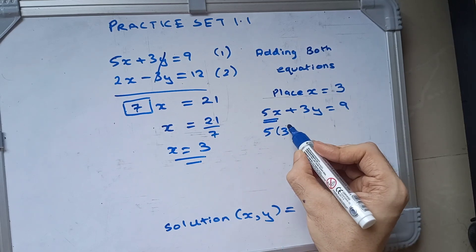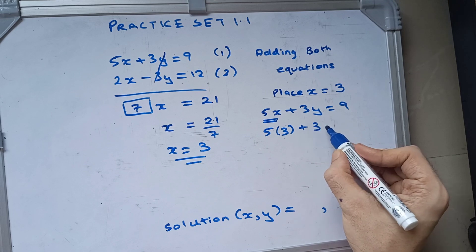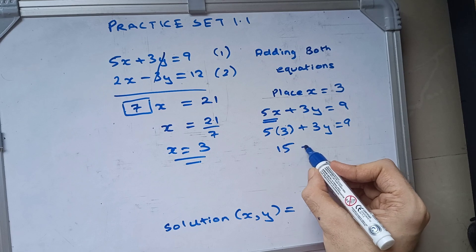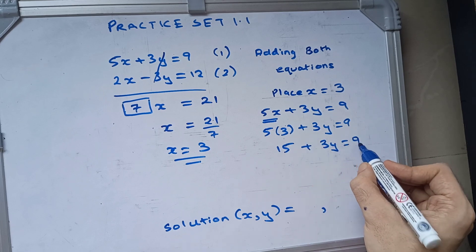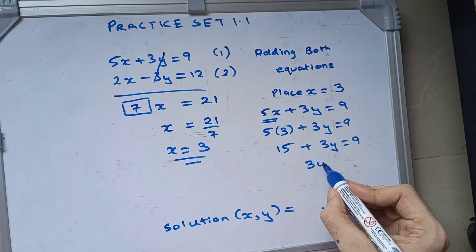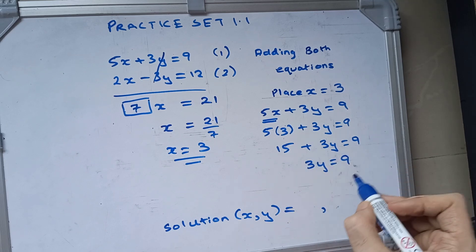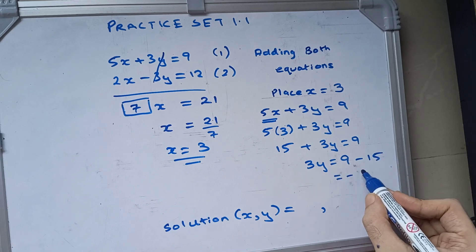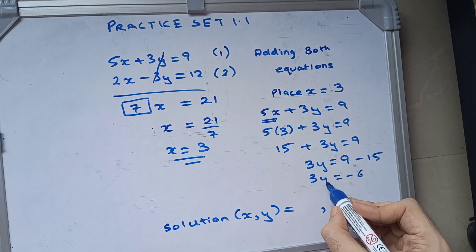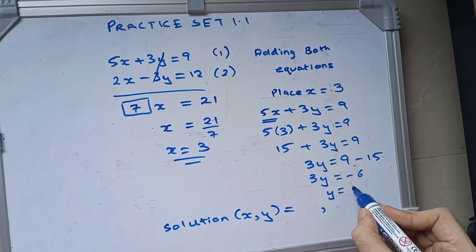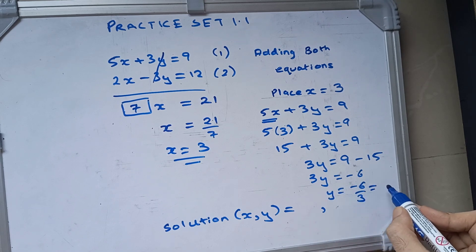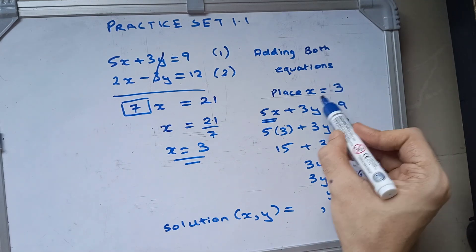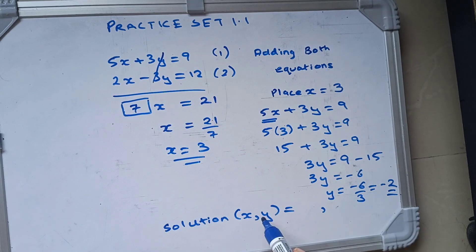We will get 5 into 3, plus 3y, which is equal to 9. 5 threes are 15, plus 3y, which is equal to 9. And now we get 3y, which is equal to 9 minus 15, which is minus 6. So 3y is equal to minus 6, y is equal to minus 6 upon 3, which is minus 2. So we got the y value. Solution is x value 3, and y value minus 2. That's the answer.